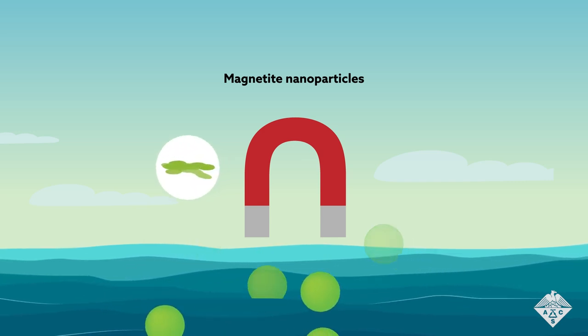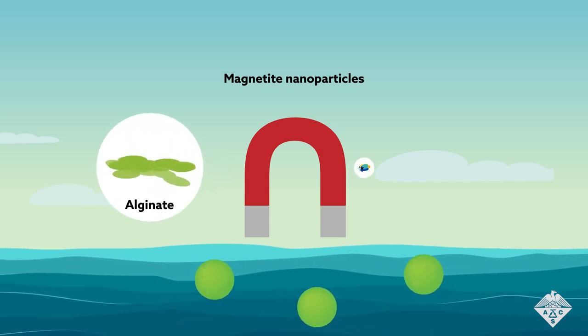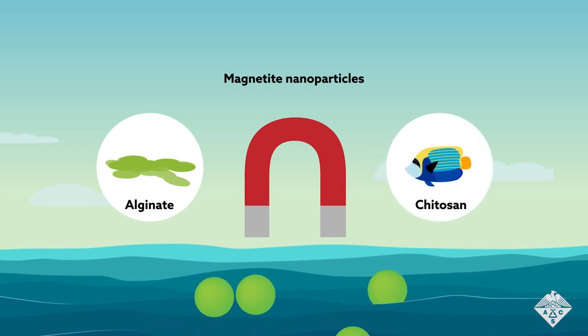The matrix consists of materials like alginate, which is derived from algae, and chitosan, which is a waste product of fish.